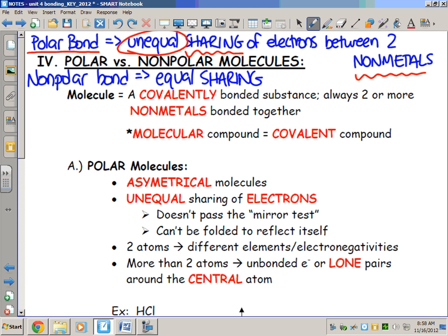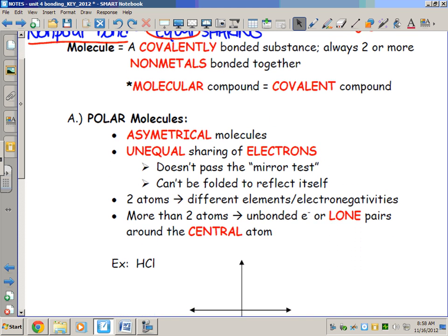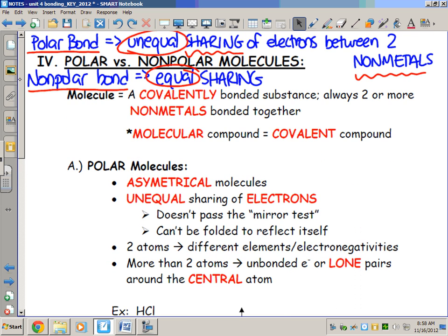A nonpolar bond by contrast is when we have an equal sharing of electrons. An equal sharing of electrons only occurs when you have a covalent bond between two atoms of the same element, and you'll see that unfold as we go through the examples.